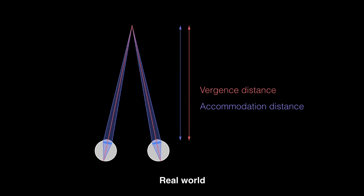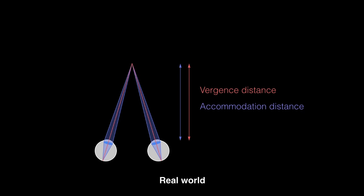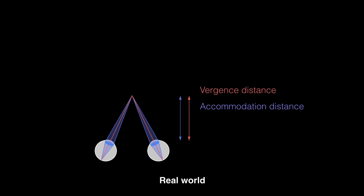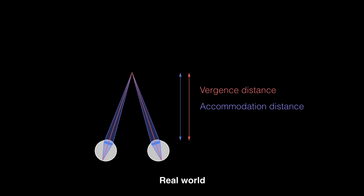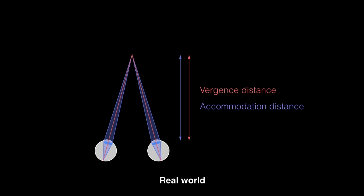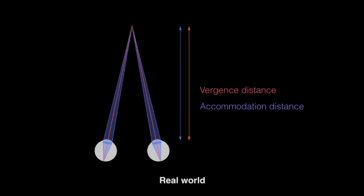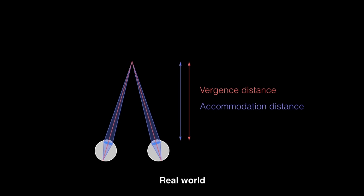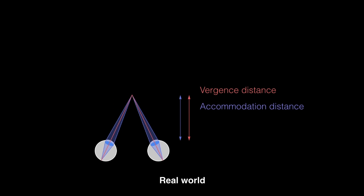When viewing an object in the real world, we converge our eyes' line of sight to fuse the images of the object into two eyes. We also focus or accommodate to the same distance so that the object is seen as sharp.